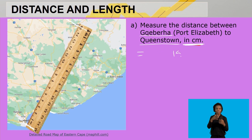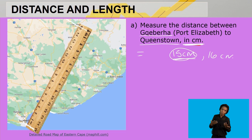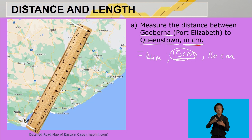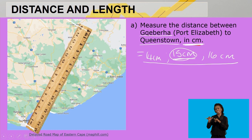Remember, if the actual measurement is 15 centimeters, other answers that will be accepted are 16 centimeters or 14 centimeters — not more or less than these values. We will only get the same values or around these three values if we follow the same procedure: draw a line at the beginning of the first circle, draw a line at the end of the second circle, then draw a straight line.